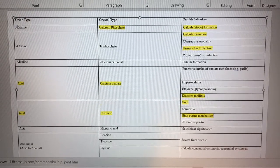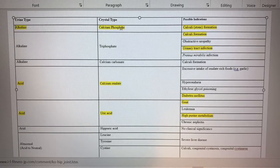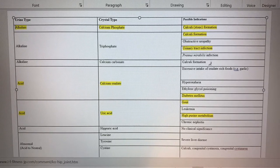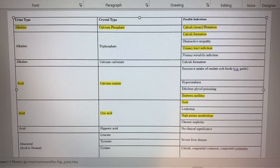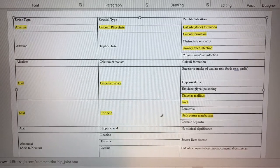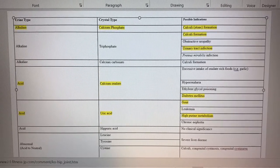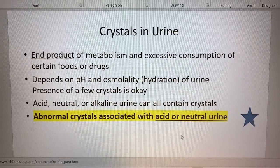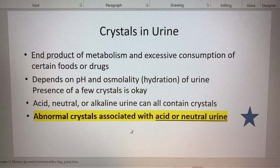That staghorn calculus is here under alkaline. Here's the calcium phosphate, and then the calculi stone formation. I think a staghorn is alkaline - it doesn't say staghorn on there, but I think that's correct. Anyway, none of this is on the exam. This is just to show you for your own reference. You'll need to pay attention to things that are highlighted on your normal slides. We do have abnormal crystals associated with acid or neutral urine.